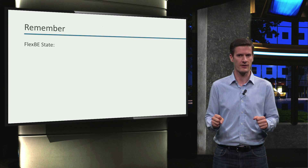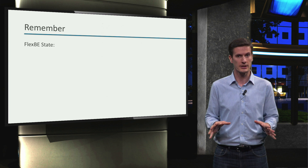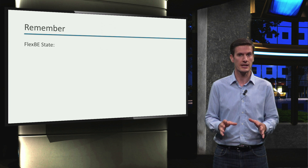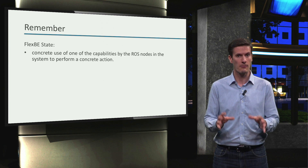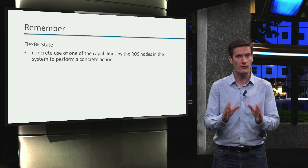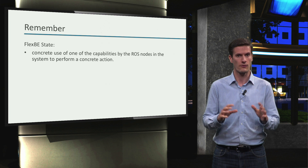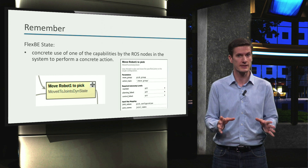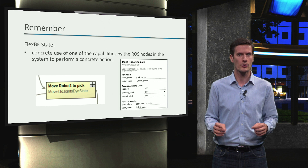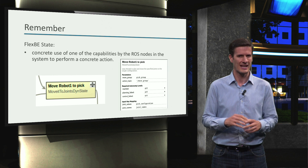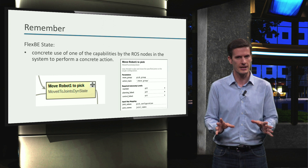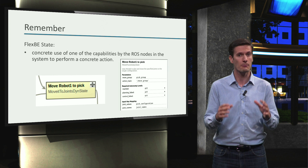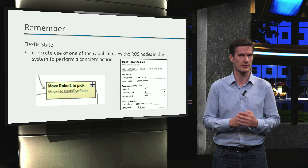First, let's remember what a FlexBE state is. In unit 3.2 this week, we said that a FlexBE state is the use of a capability in our ROS system to perform a specific action. For example, the 'move robot1 to pick' state in our demo uses the move group to move the robot to a specific configuration. Let's dig a bit deeper on this idea and what it implies regarding state implementations in FlexBE.